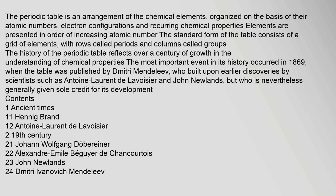The periodic table is an arrangement of the chemical elements, organized on the basis of their atomic numbers. Electron configurations and recurring chemical properties — elements are presented in order of increasing atomic number.